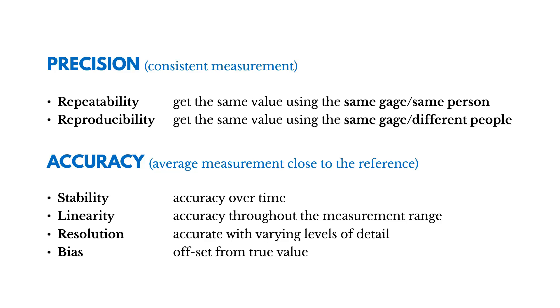And then there's reproducibility, getting the same value using the same gauge but different people. It's like if you have a doctor measure someone's blood pressure over and over again. If that doctor gets relatively the same measurement, we've got repeatability. And reproducibility would be if we have a doctor and a nurse getting the same measurement, different people.